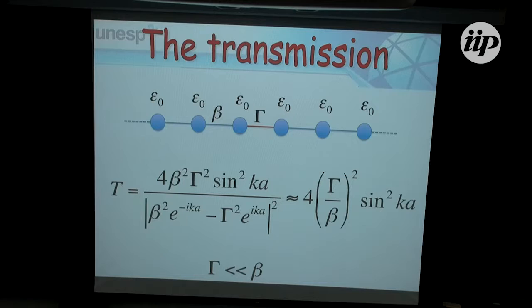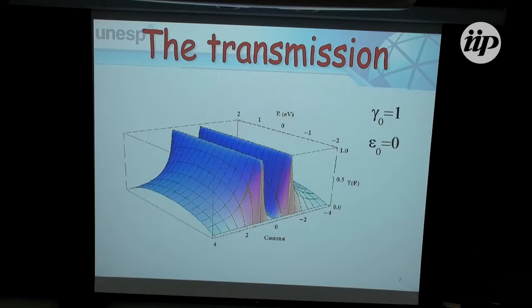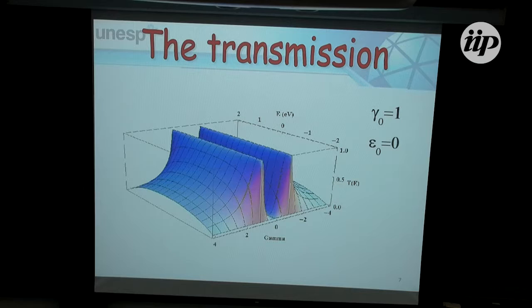For a choice of epsilon zero — my on-site energy — and varying the values of gamma (the coupling), I get peaks in the transmission. Whenever I reach gamma zero equal to 1, I always get one quantum of conductance, and then different values of transmission for other couplings. You can clearly see this sine squared behavior in the transmission. This is the problem of a scattering center.